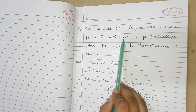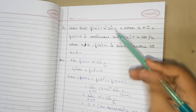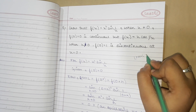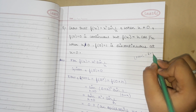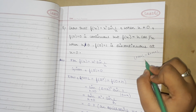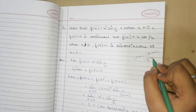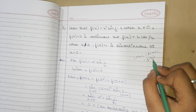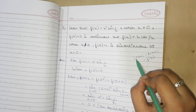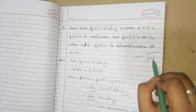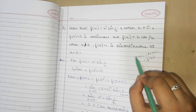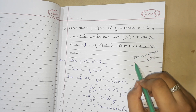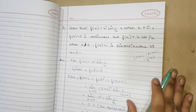To prove continuity, we need to show that the left-hand limit equals the right-hand limit equals f(x₀), at the point x₀ we are investigating. That is, LHL = RHL = f(x₀). If all three are equal, then the function is continuous; otherwise it is discontinuous.